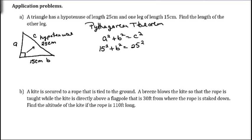And 15 squared is 225. And 25 squared is 625. And so, we need to solve this for B. So, I'm going to subtract 225 from both sides. That gives me B squared is equal to 400.